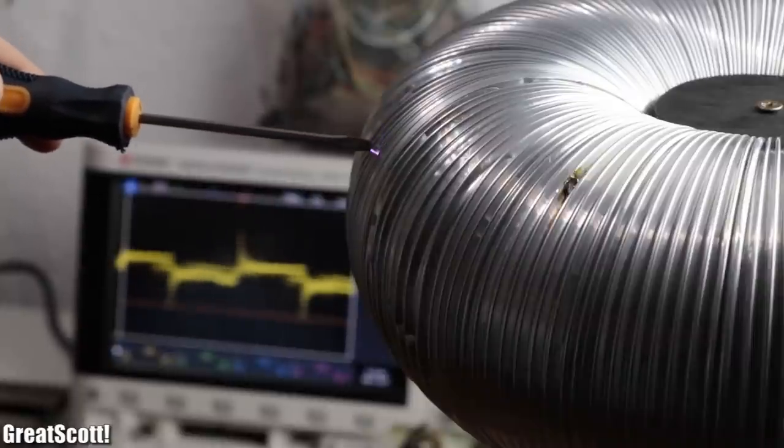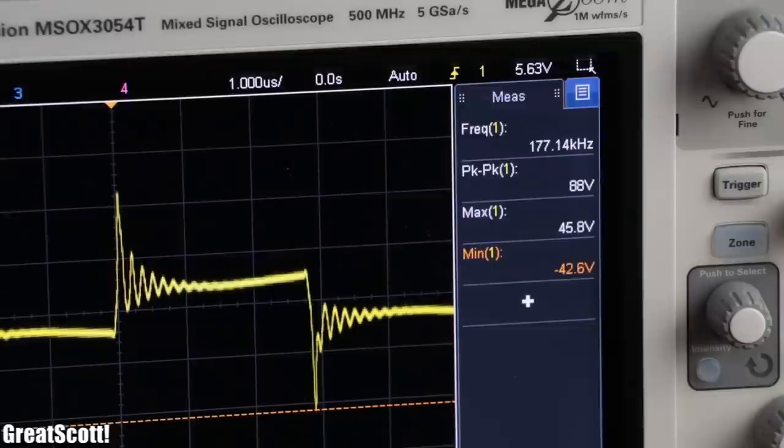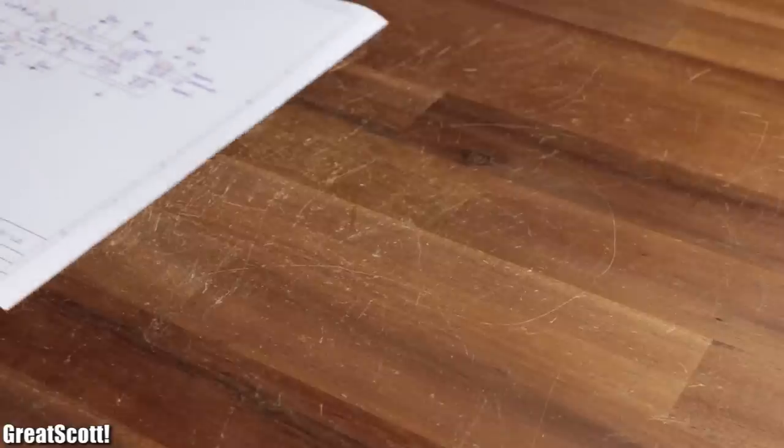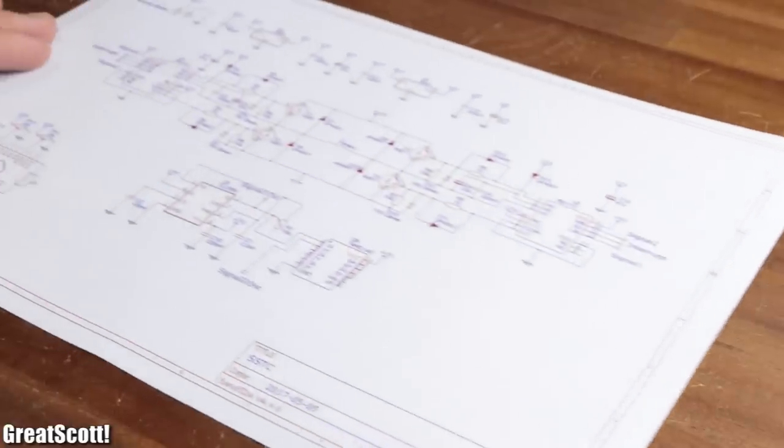...we successfully lowered the resonance frequency of the Tesla coil down to around 170 kilohertz, which means it is now time to have a closer look at the new circuit schematic.